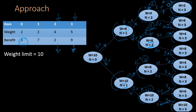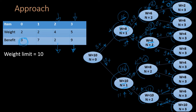Now knowing the benefits returned by all n=2 states: w=6, n=2 returns 9. So at state w=8, n=1, including item 1 gives benefit 7 plus 9 = 16, and excluding gives 0 plus 9 = 9. At state w=10, n=1, including gives 16 and excluding gives 11. Clearly, in both states w=8, n=1 and w=10, n=1, we are better off including item 1 — both return benefit 16.